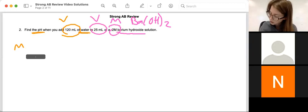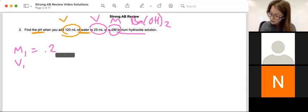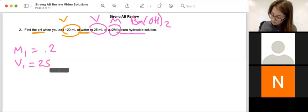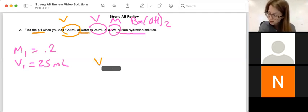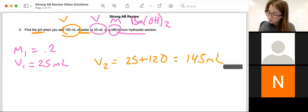The original solution that's not diluted is everything I currently have in pink. So M1V1, they actually give us a molarity, which is nice. They give us a volume. They also give us a volume of water. That means after I dilute it, I started with that 25, but I've added another 120. So I have 145 milliliters after the dilution. And if I can solve for M2, I should be good.